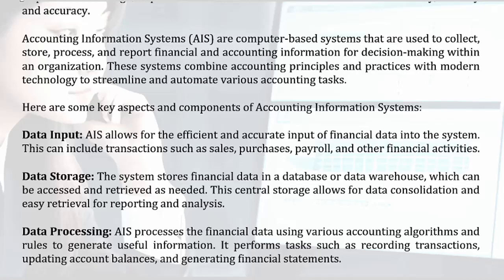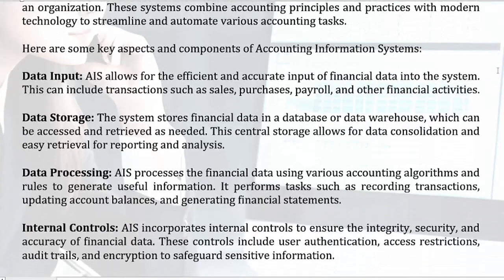Here are some key aspects and components of accounting information systems. Data input: AIS allows for the efficient and accurate input of financial data into the system. This can include transactions such as sales, purchases, payroll, and other financial activities.